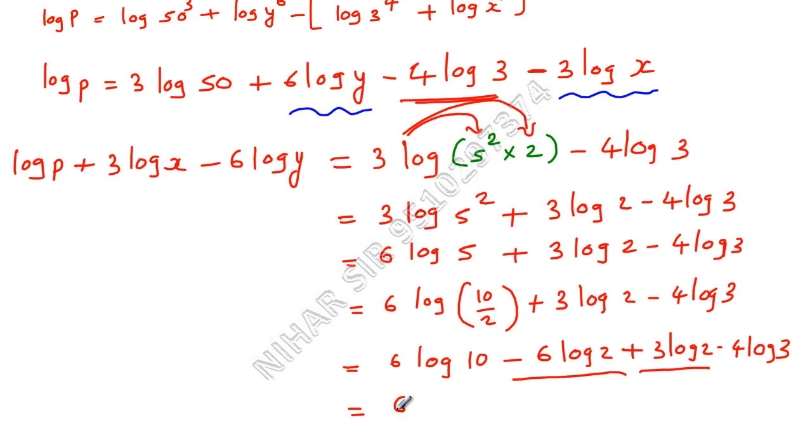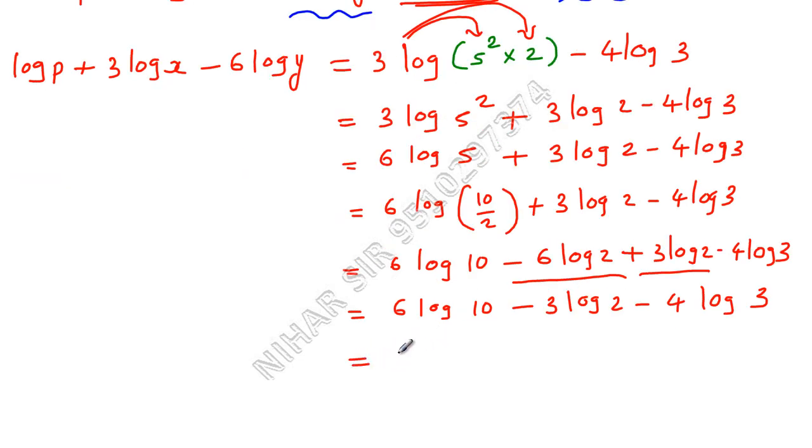So this will be 6 log 10. This will be minus 3 log 2 minus 4 log 3. Now value of log 10 is 1. So 6 into bracket 1 minus 3 log 2 minus 4 log 3. So finally I have 6 minus 3 log 2, 4 log 3. So finally I have 6 minus 3 log 2, 4 log 3 and you can see it's proved. I hope it helps, thank you.